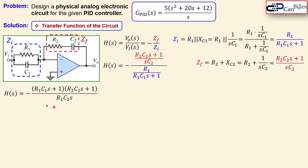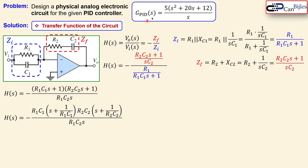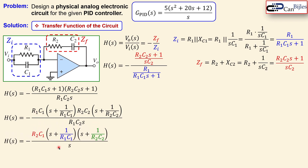After simplification, we can recognize the poles and zeros more easily. Taking out the coefficients of s — factoring out R1·C1 in the numerator and R2·C2 in the denominator — the R1 and C2 terms cancel between numerator and denominator, leaving the expression with R2 and C1, plus the s term in the denominator.